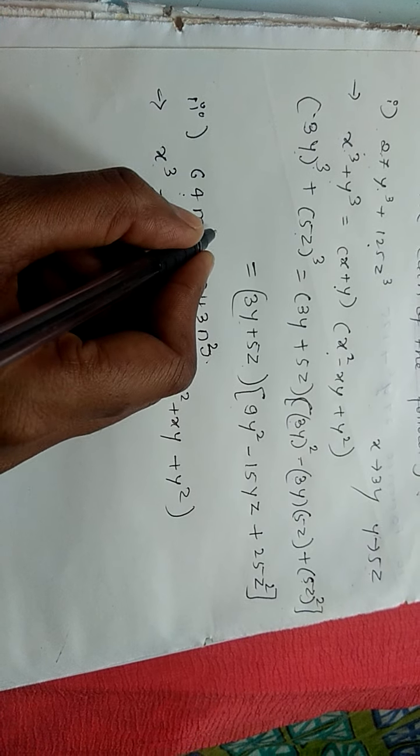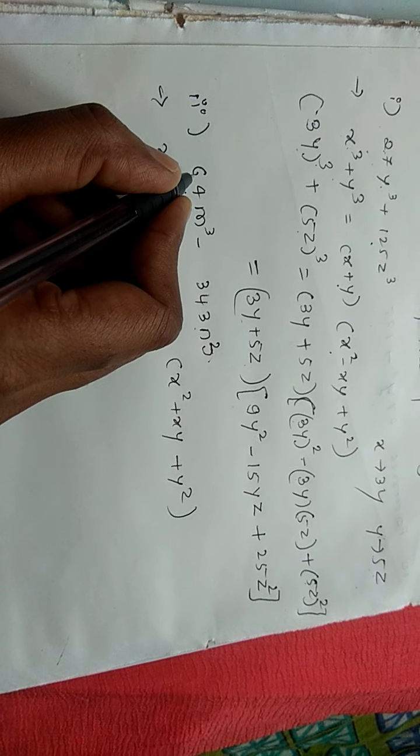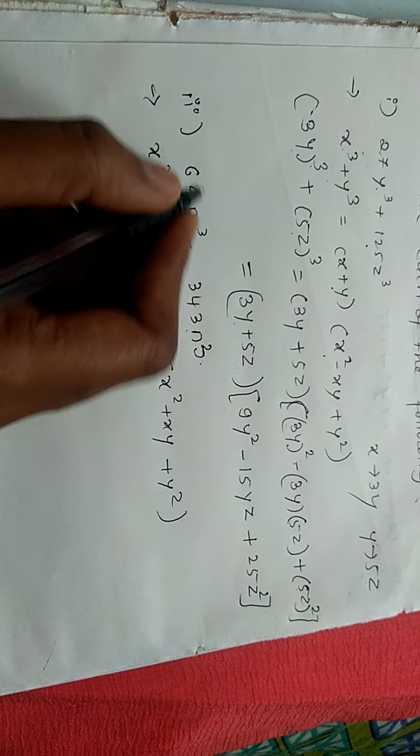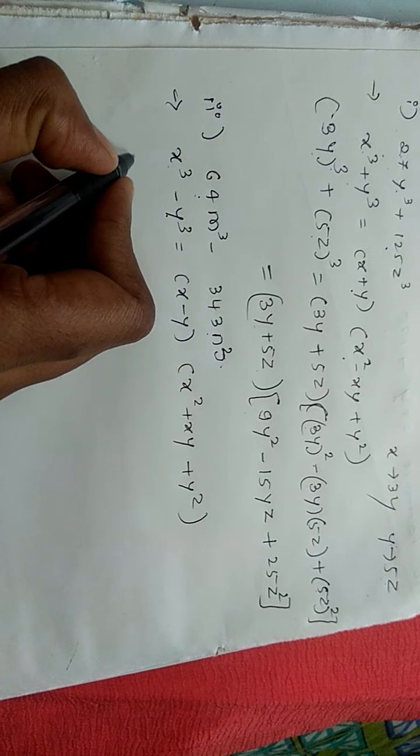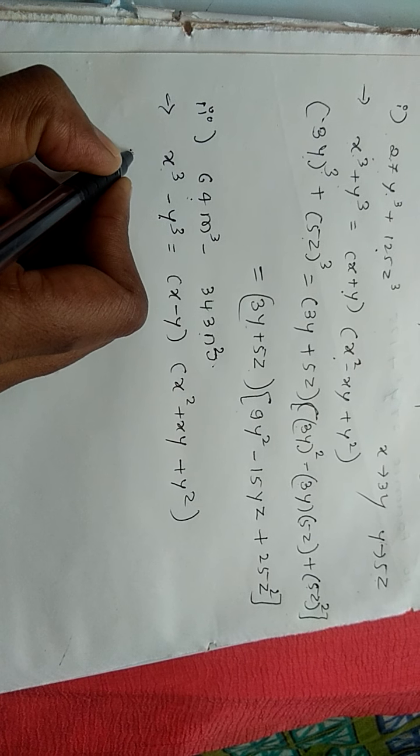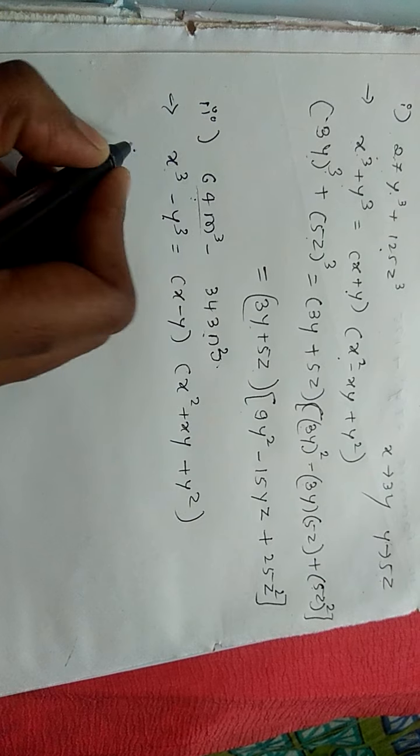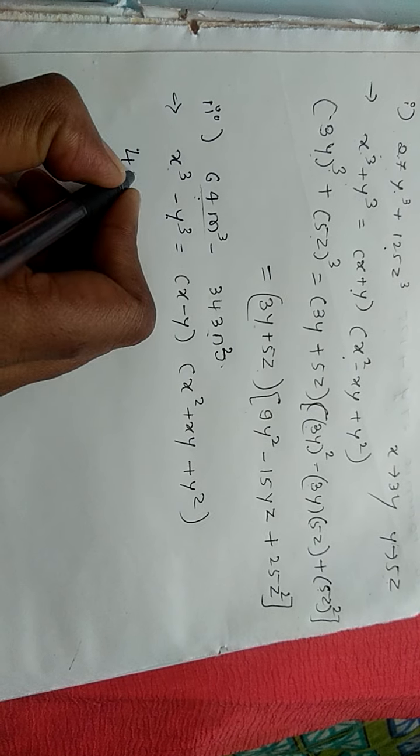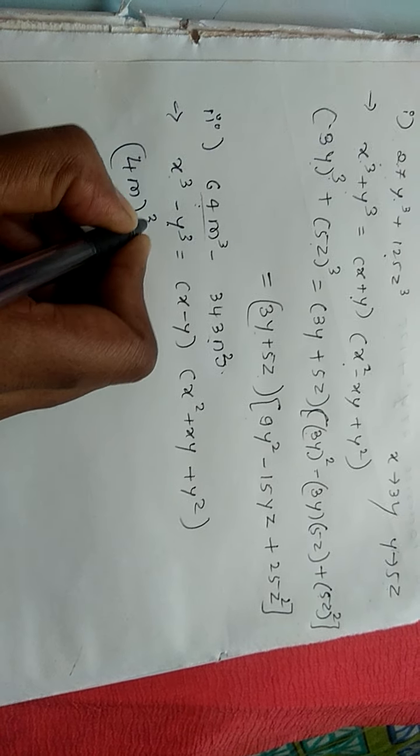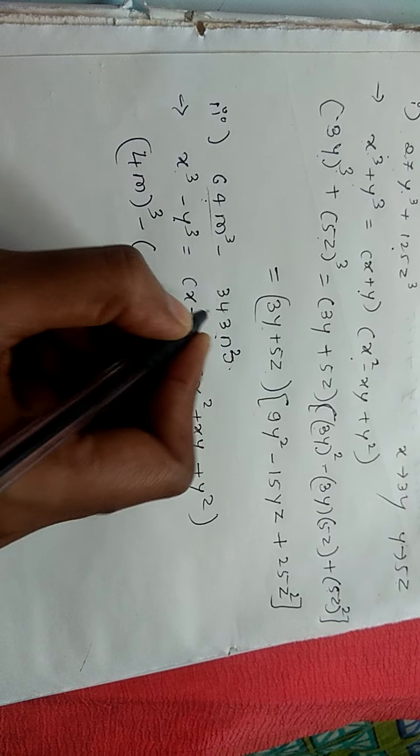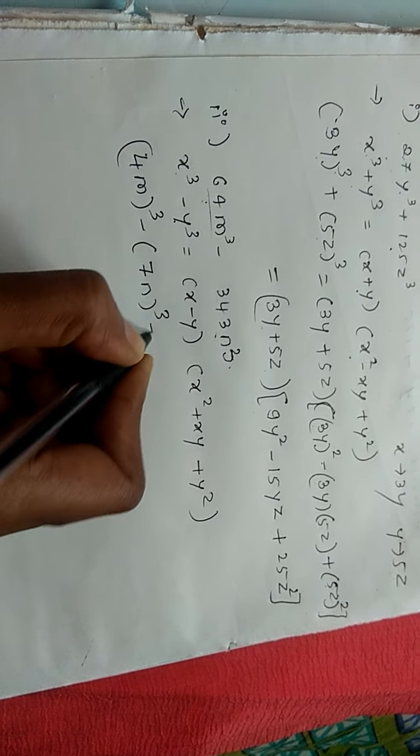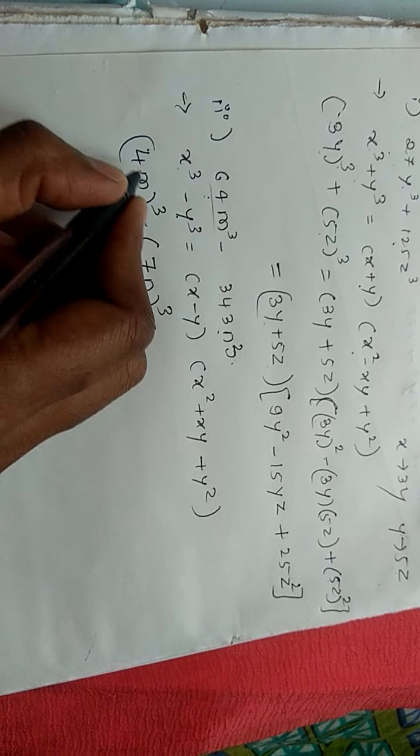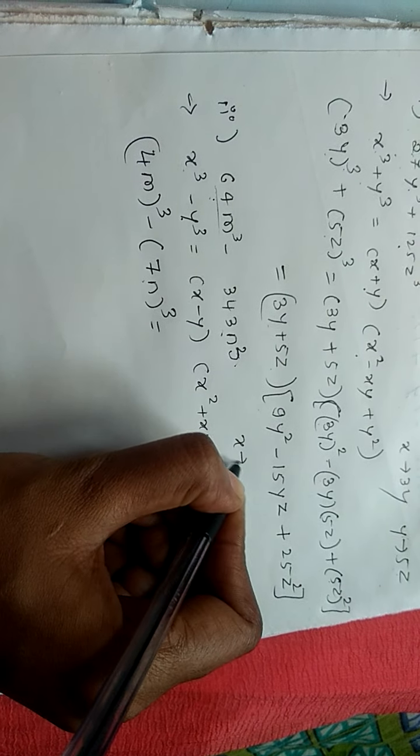So x cube means first term cube. So 64 is a cube of number 4: 4 times 4 is 16, 16 times 4 is 64. So this I'll write in cubic form, that is 4m whole cube minus 343 is a cube number, that is cube of 7: 7n whole cube. So we have to identify what is x here: x is 4m, y is 7n.